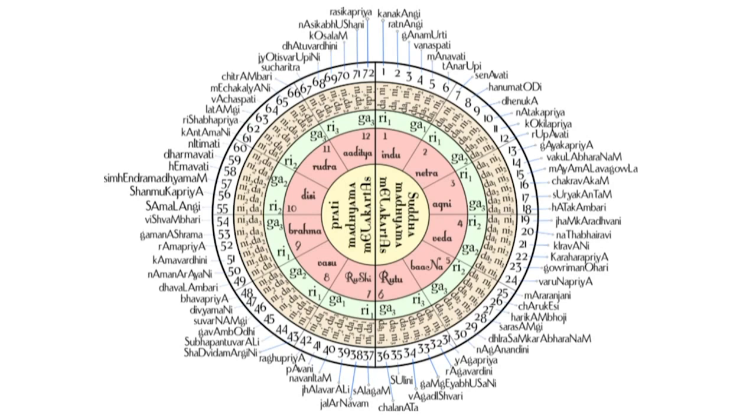As you can see, the 72 Melakartas are grouped in sixes and we have 12 such groups, each group having six Melakartas. If you would remember, that is how the Melakartas were actually generated — every combination of Ri and Ga can be combined with six combinations of Dha and Ni.